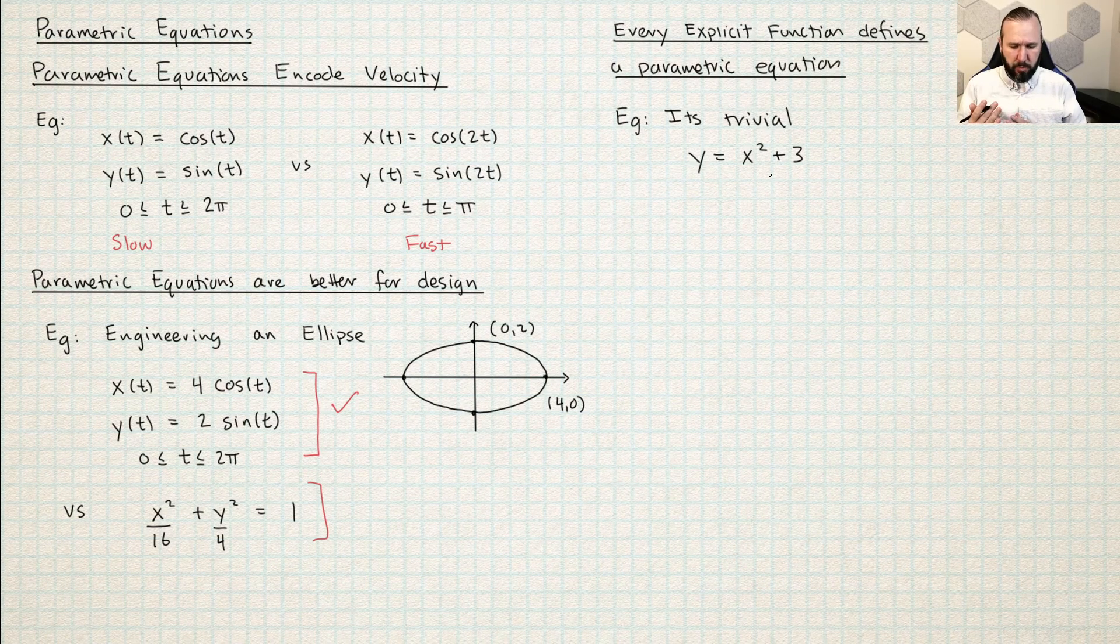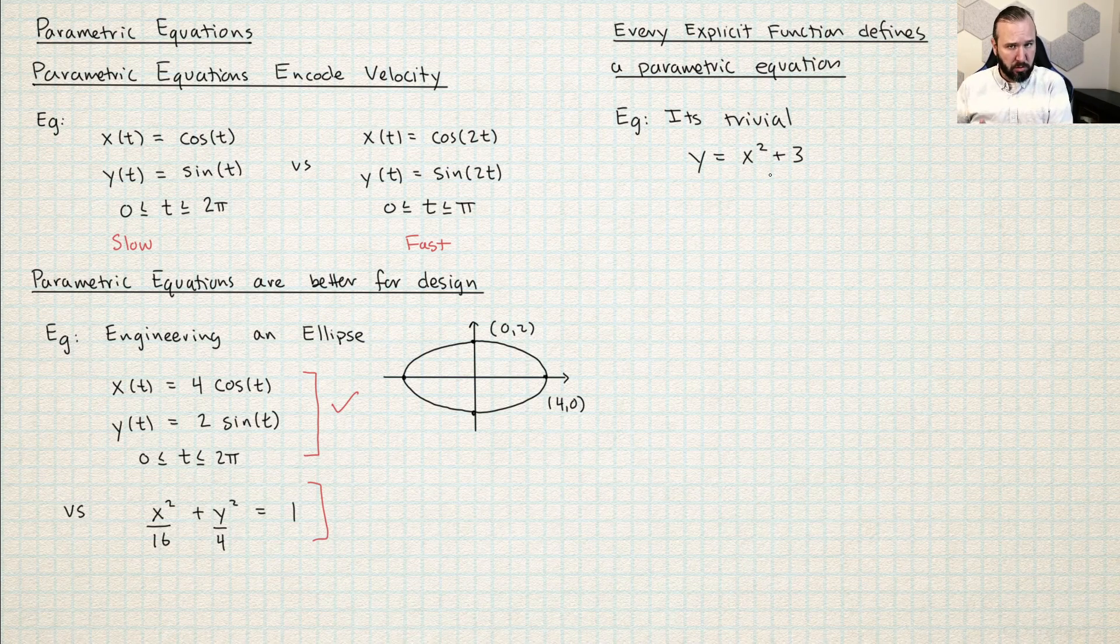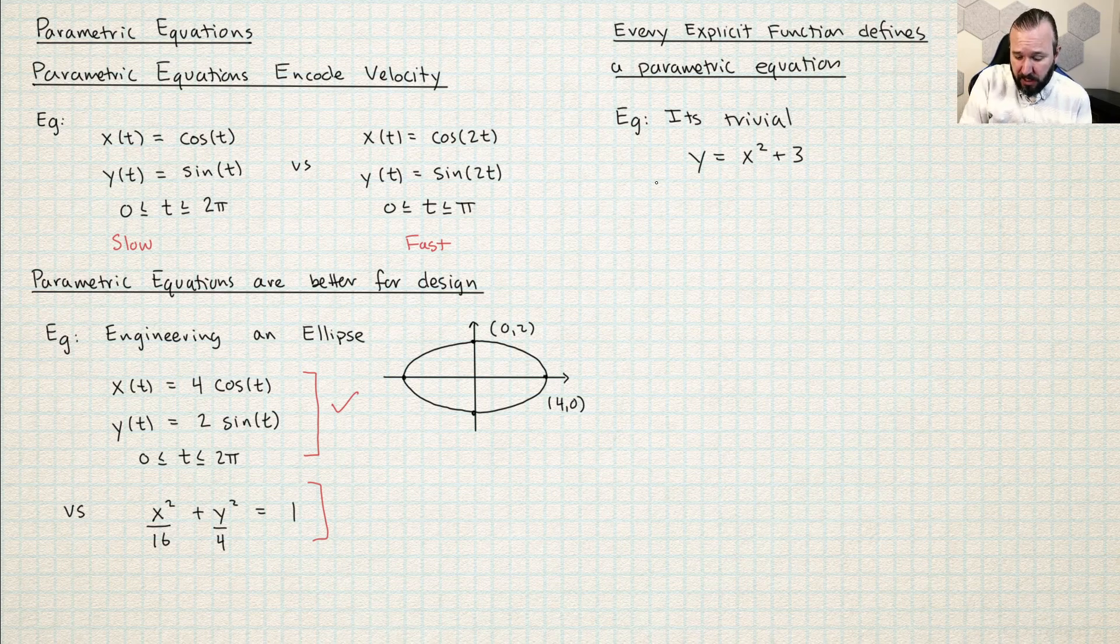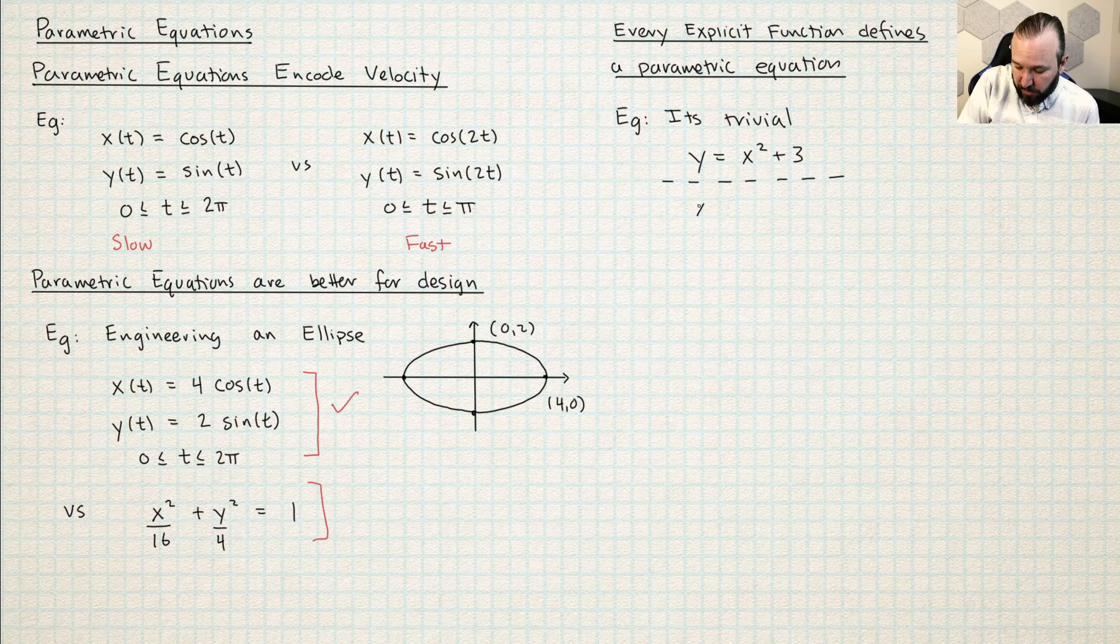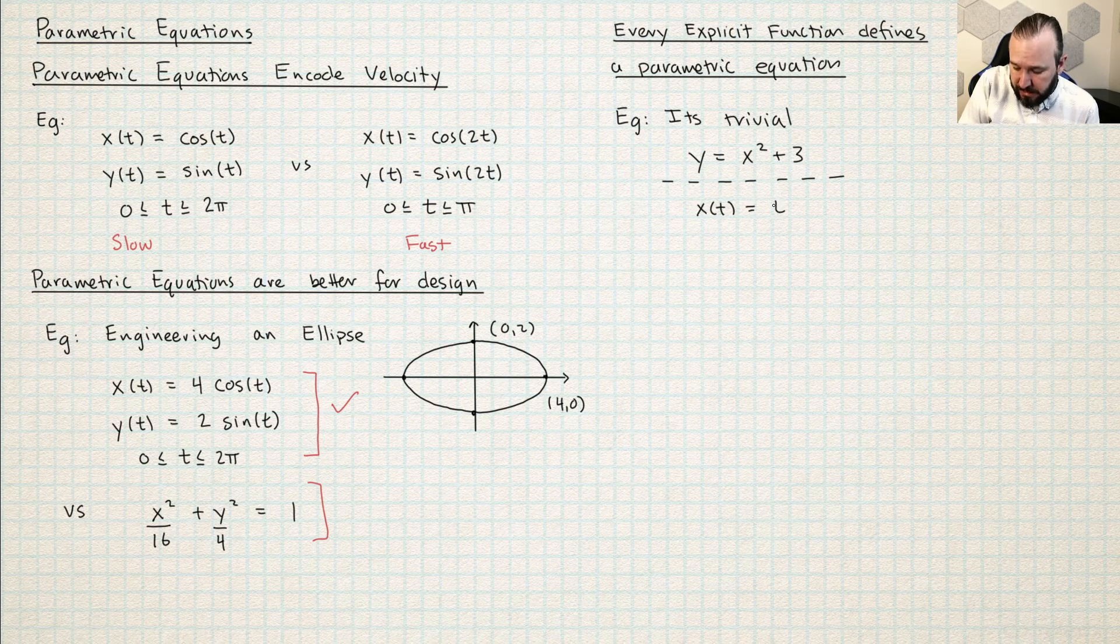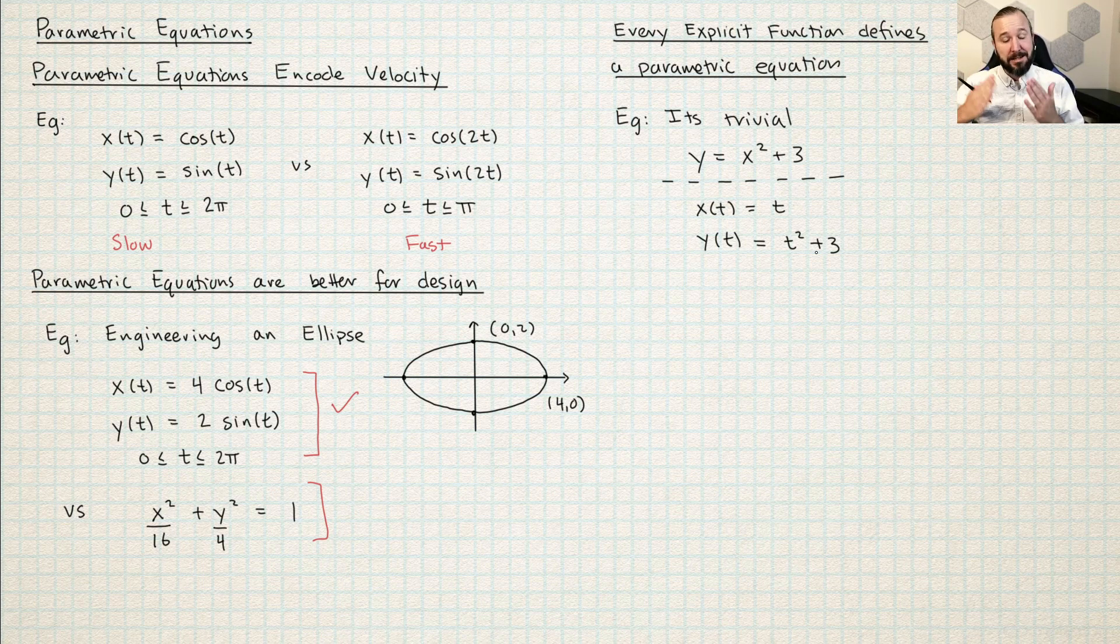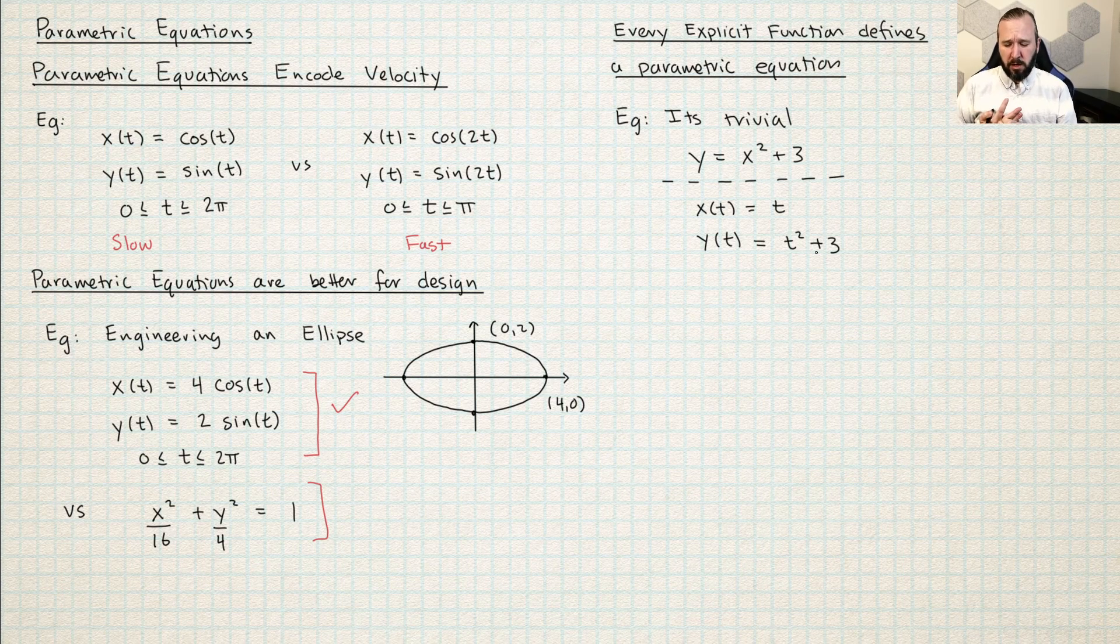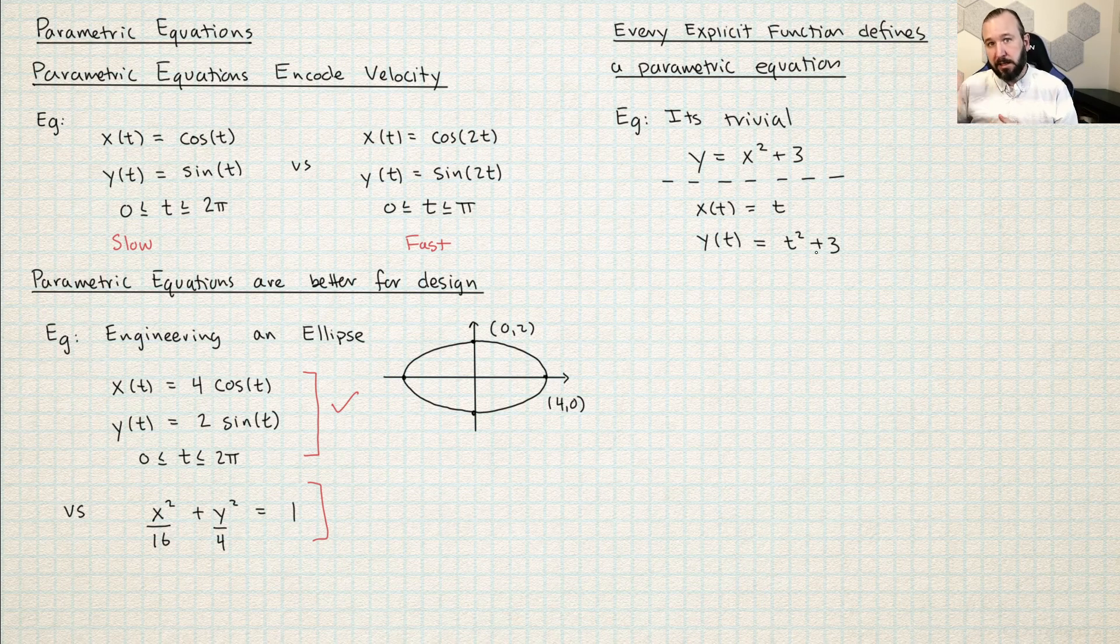One quick final point about parametric equations is the theory of parametric equations is like an umbrella. Anything that you can do with explicitly defined functions, you can also do with parametric equations. Here I have y explicitly defined as a function of x, y = x squared plus 3. And I just want to show you this kind of trivial way that I can easily take this explicitly defined function and turn it into a parametric equation. So I'm going to choose x(t) = t and then y(t) = t squared plus 3. So anytime you have an explicitly defined function, you can immediately turn that into a parametric equation. So there's really no reason to use explicitly defined functions anymore, because anything that you can do, any math that you can do with a regular old xy equation, you can immediately turn that into a parametric equation.